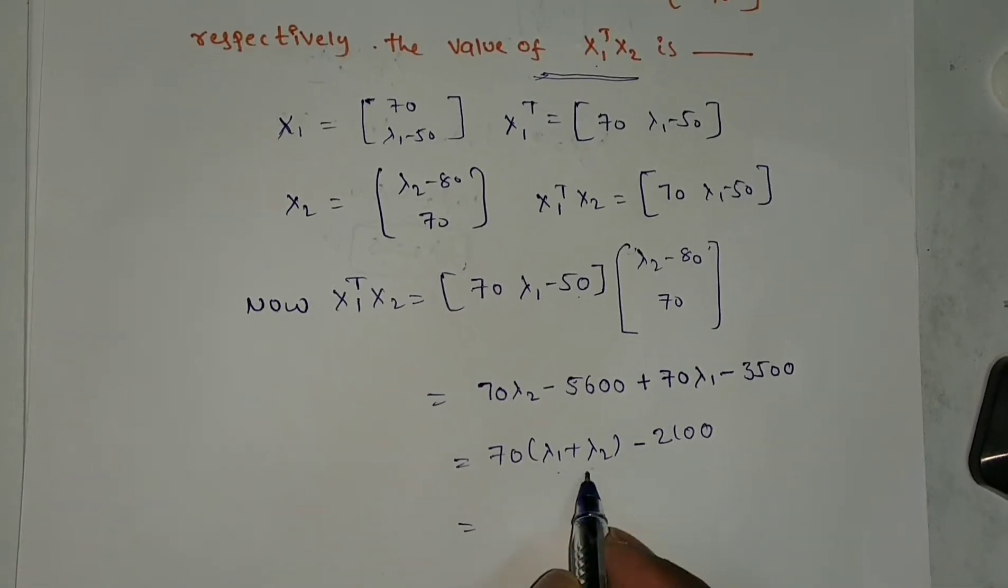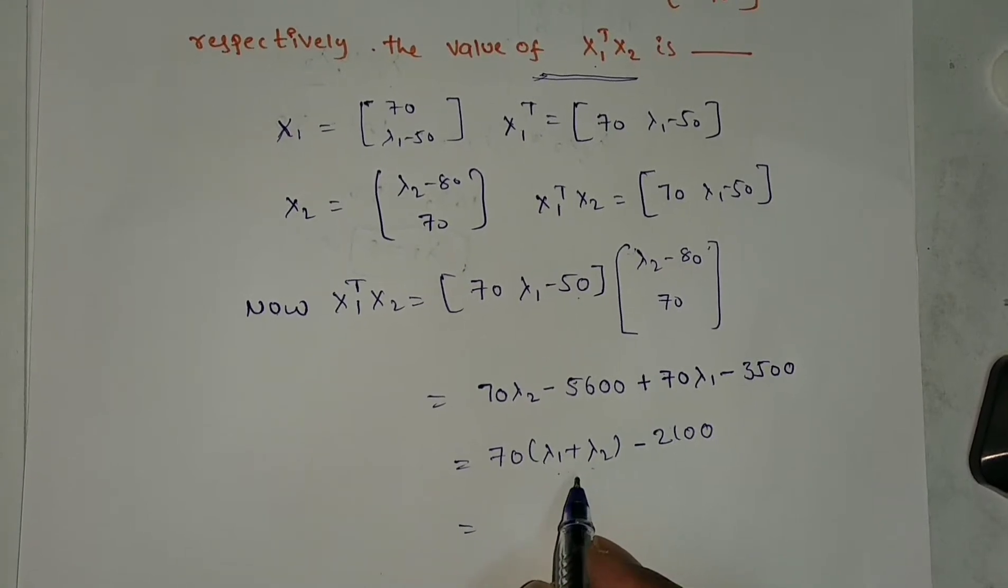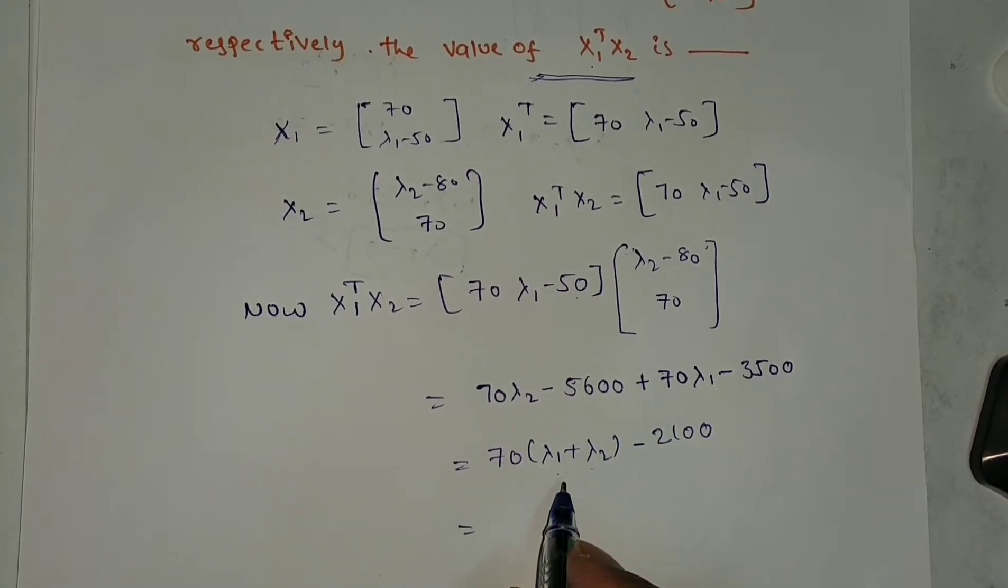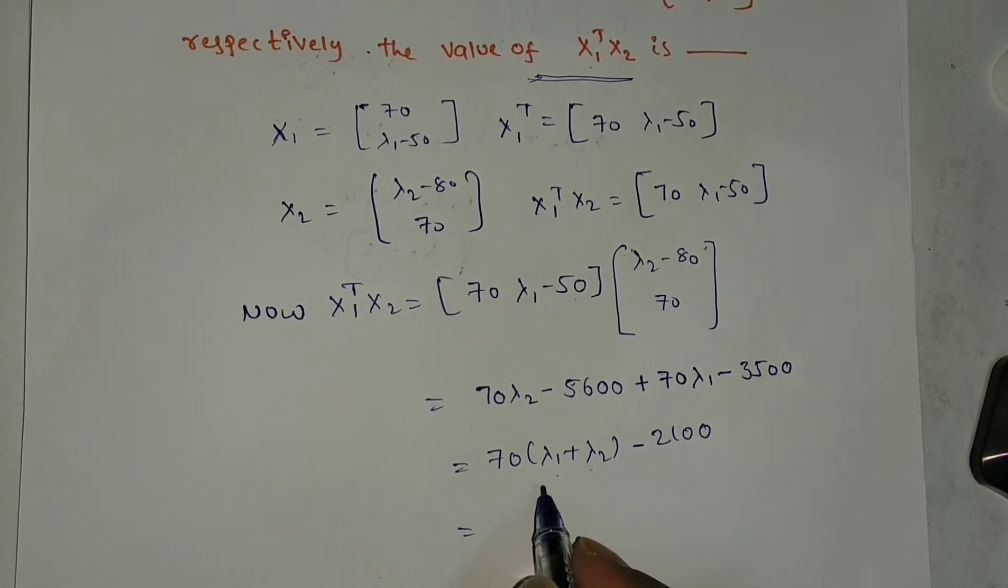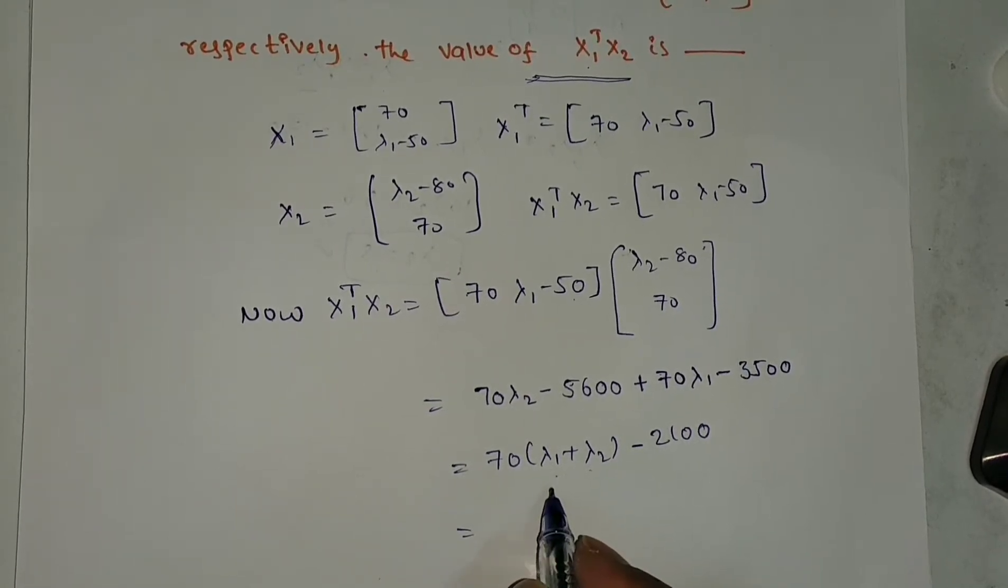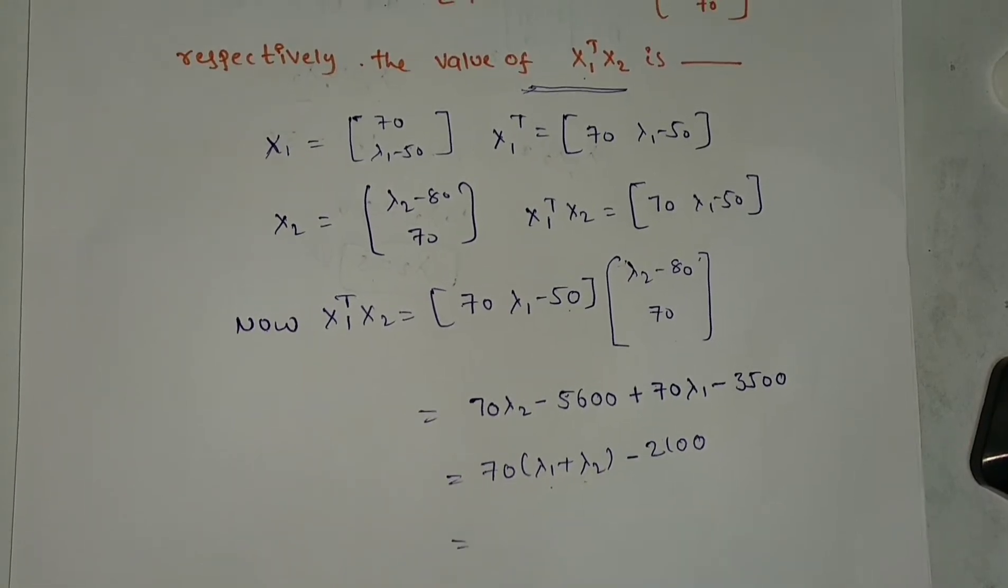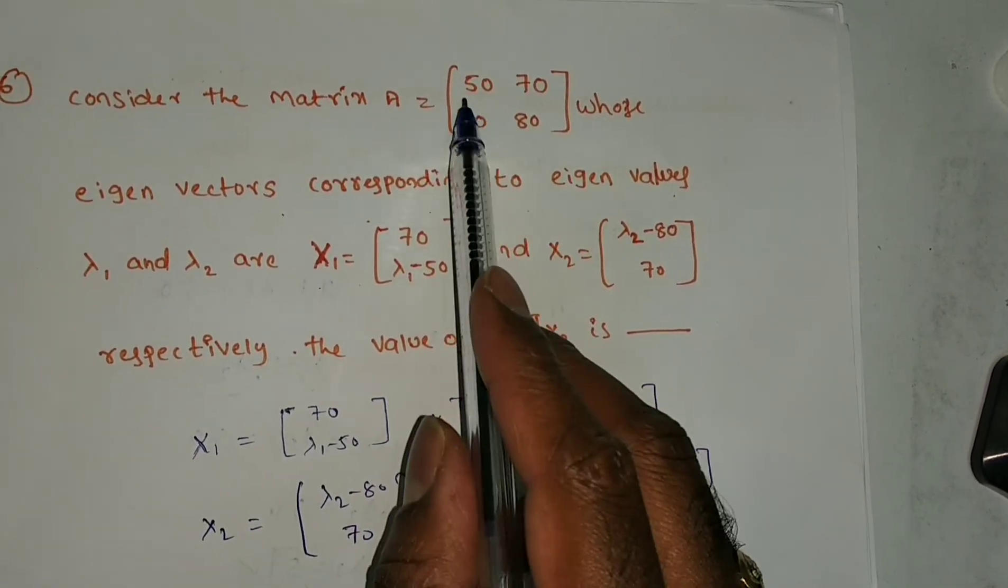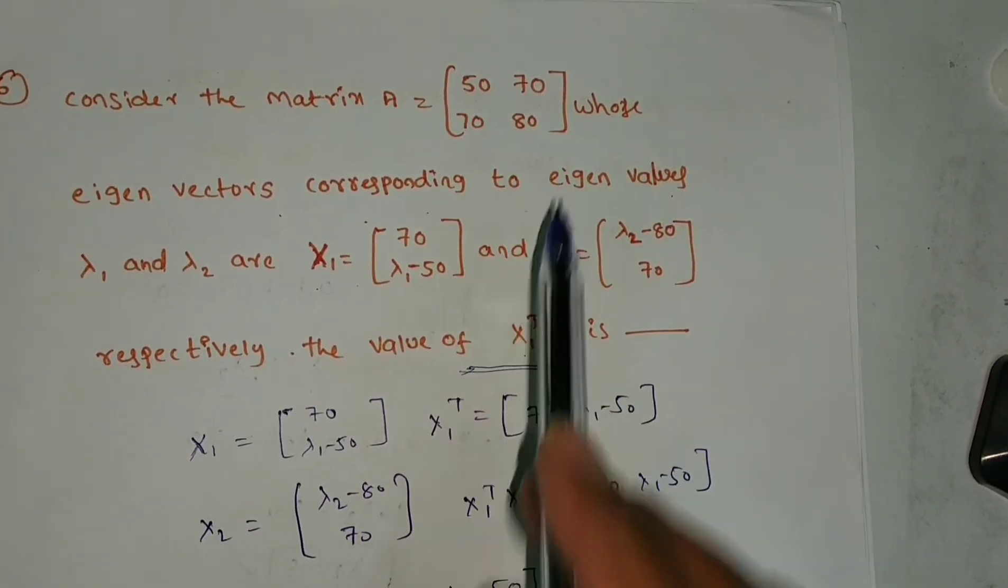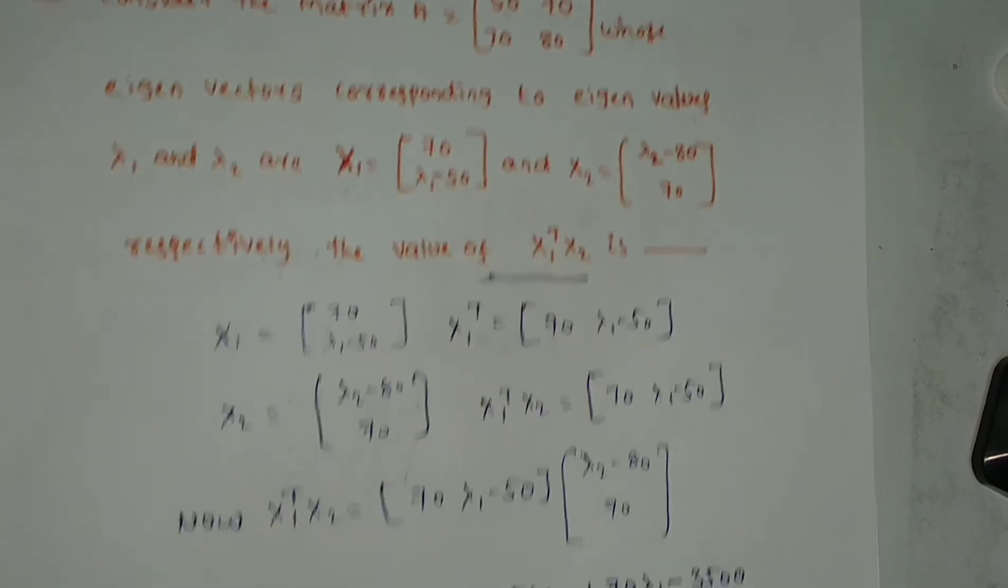Now, do you know λ₁ + λ₂? They haven't given eigenvalues, but this is sum of eigenvalues. Use the property: sum of eigenvalues equals trace of A. What is the given matrix? [50, 70; 70, 80]. What is the trace? 50 plus 80 is 130. So 70 times 130 minus 9100.